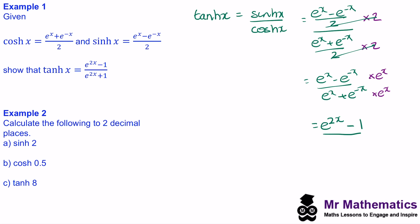On the denominator the same thing happens: we add the powers using the multiplication rule of indices to get e^(2x), and the x added to negative x makes zero, so again one. This gives us the equation for tanh(x) = (e^(2x) − 1) / (e^(2x) + 1).